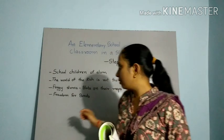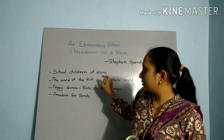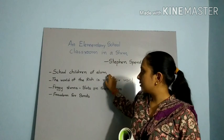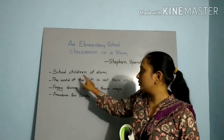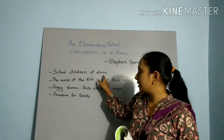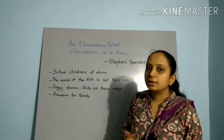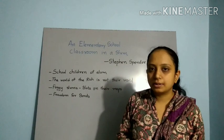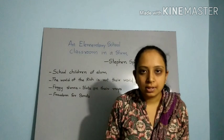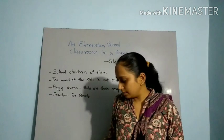'One unnoted, sweet and young — his eyes live in a dream of squirrel games in tree room other than this.' One-line description: a description of the school children of slums is given in this first stanza.